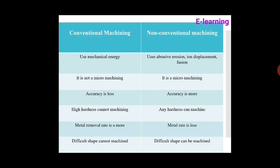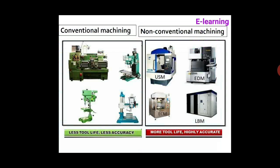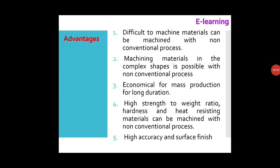Conventional machining processes cannot produce difficult shapes, whereas non-conventional machining is generally used for producing difficult shapes. Additionally, conventional machining has less tool life and less accuracy, while non-conventional machining offers more tool life and higher accuracy.